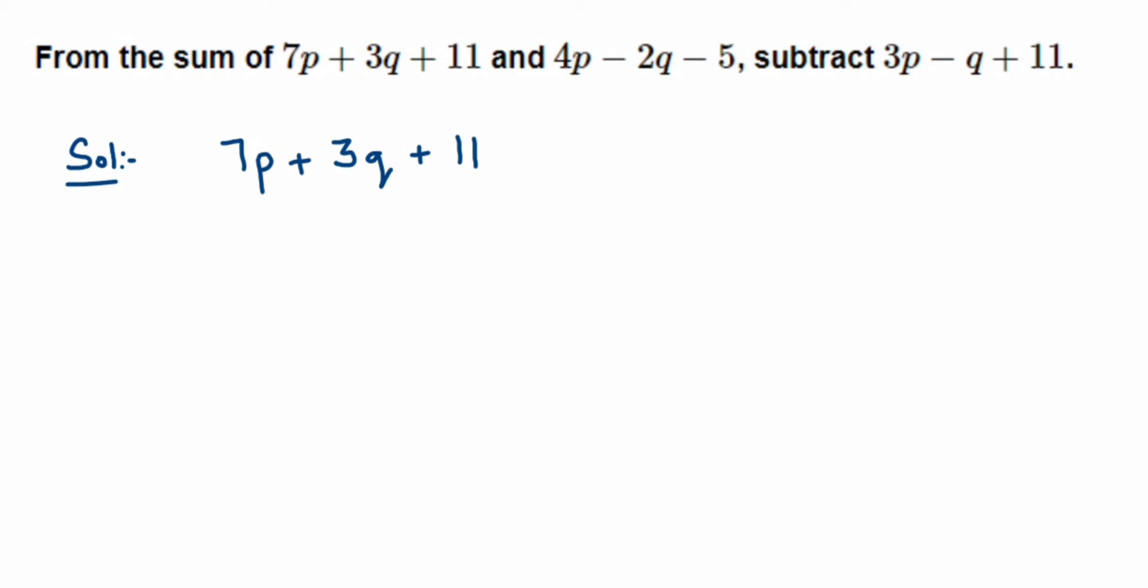You have to write each term below the like term. For example, 4p is going to come below the 7p - I should not put this below the 3q. So the like terms we have to place one below the other. Next we have -2q, so it's -2q, and then -5 which is constant is going to come under 11.